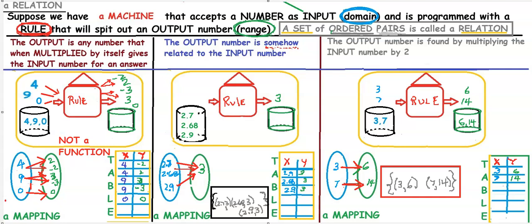We can show the mapping. Everything matches up. This is a function. So the middle one and the far right are both functions.